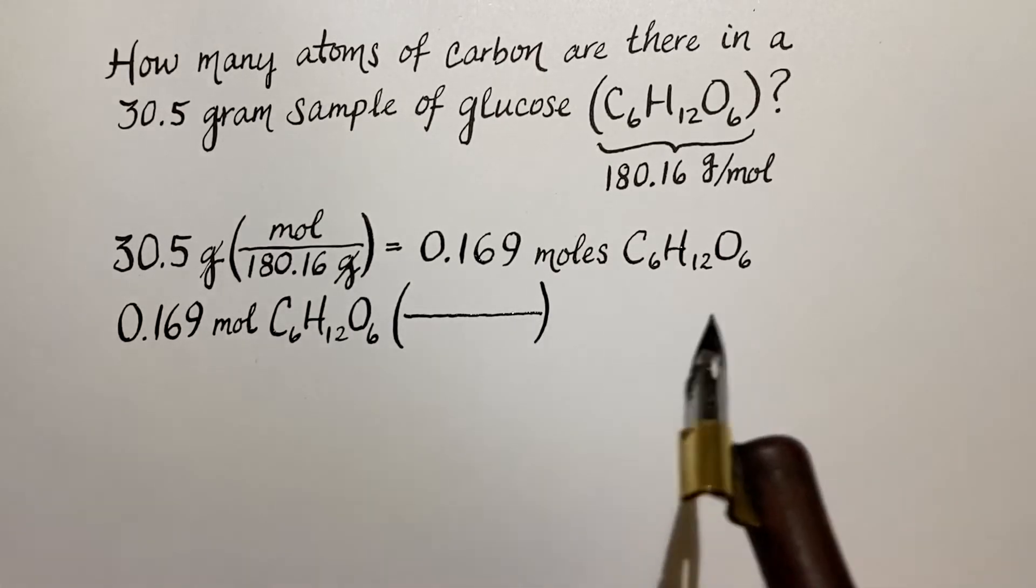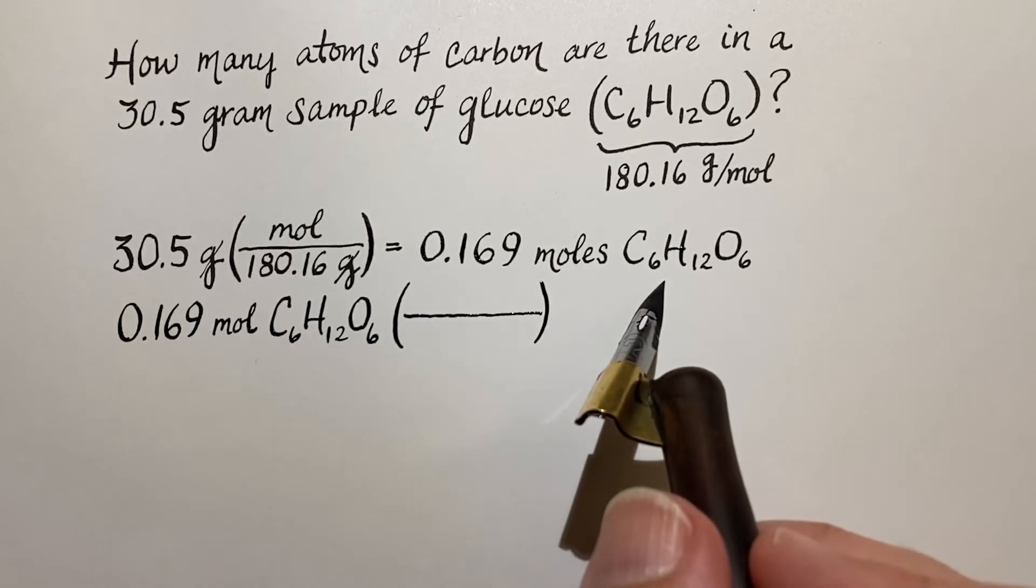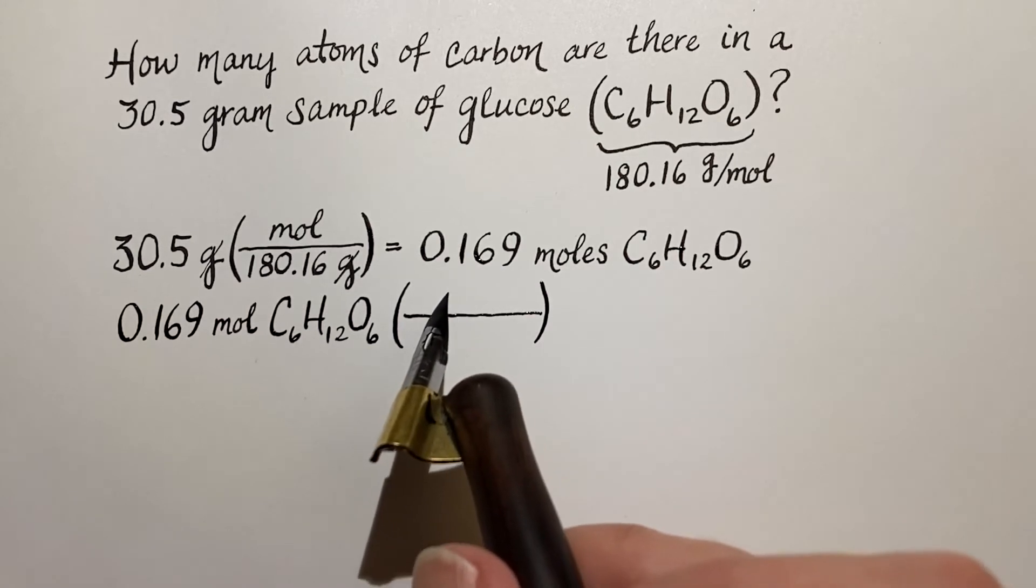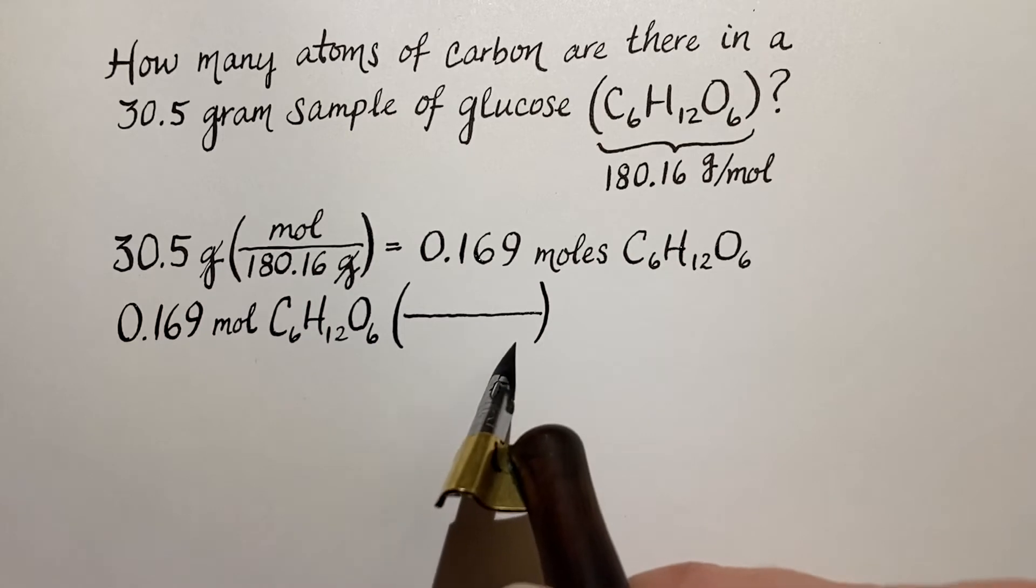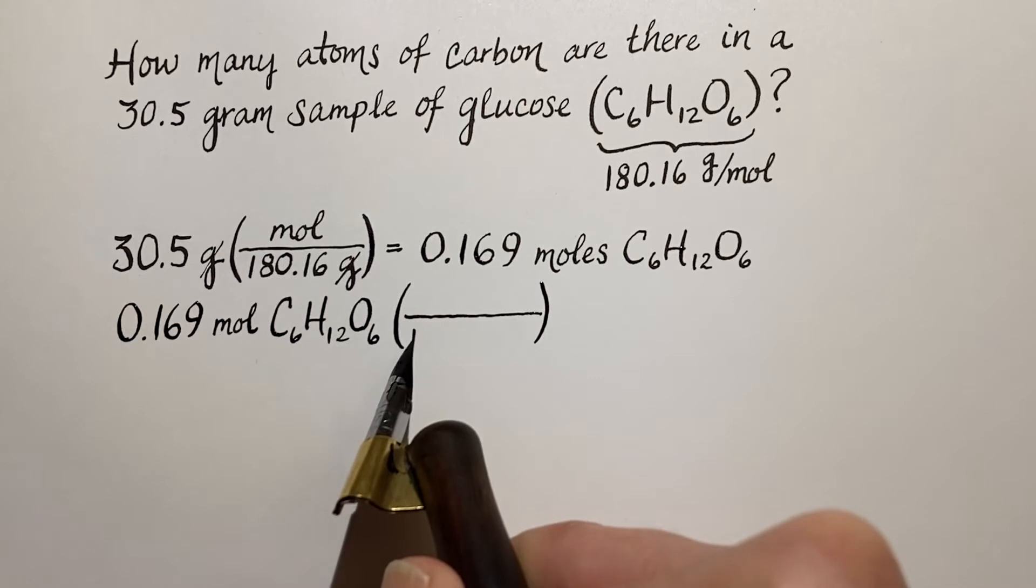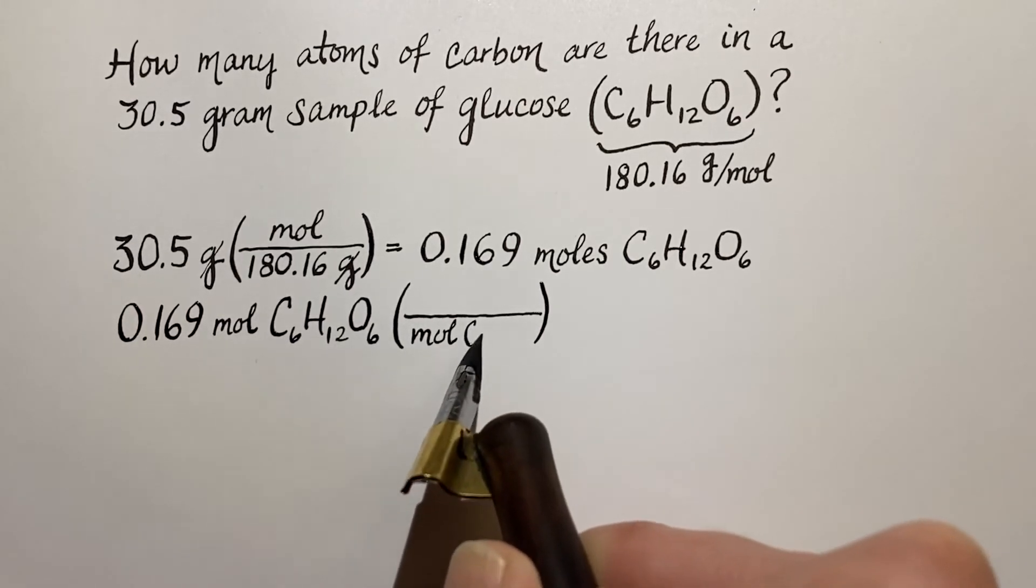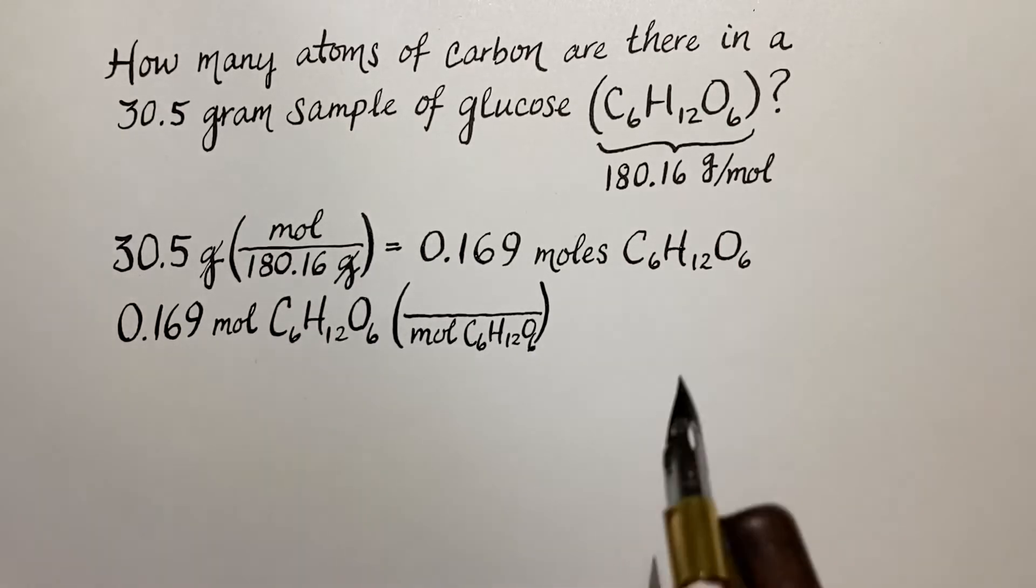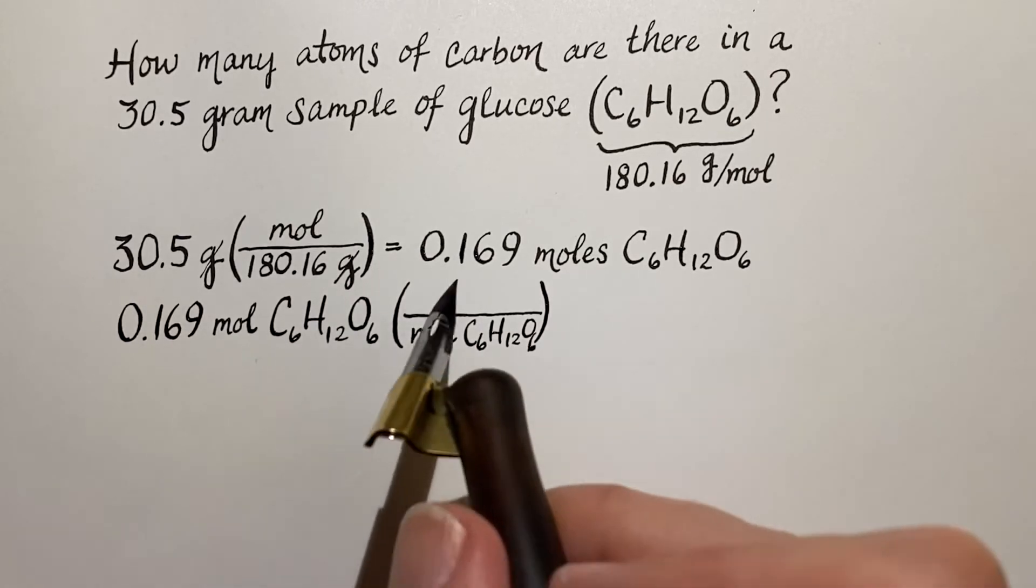We want to look at the formula and determine what is the ratio of moles of carbon atoms over moles of the molecules of glucose. So every mole of this whole molecule, we've got six carbon atoms in there.